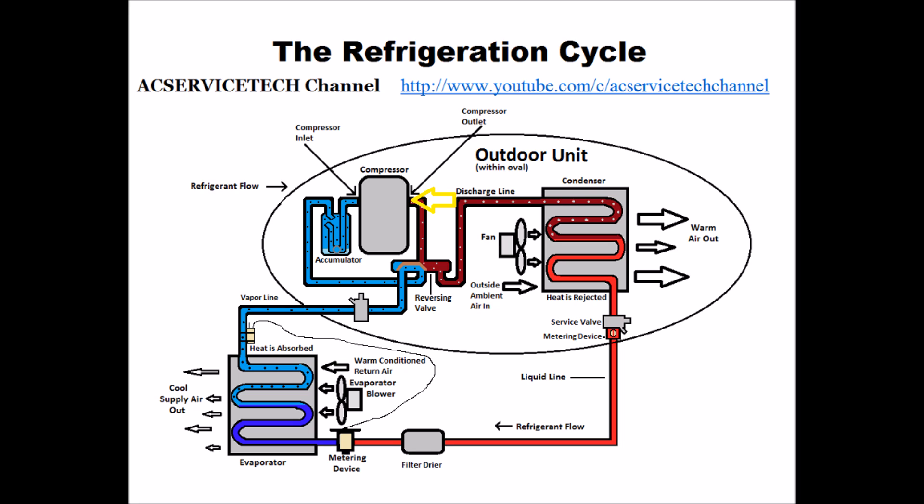This point is called the discharge line. It then goes through the reversing valve and is still considered the discharge line — it's the high pressure, high temperature vapor refrigerant. It then goes into the outdoor coil, which in this case is the condenser coil because we're in cooling mode.